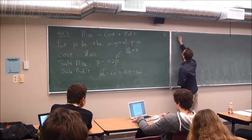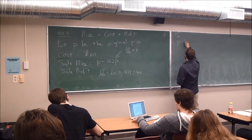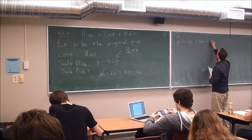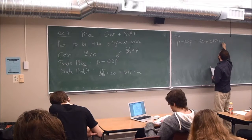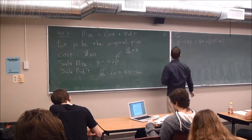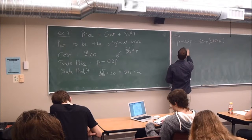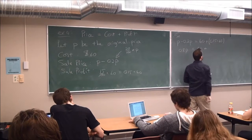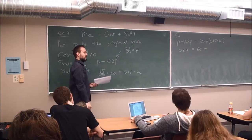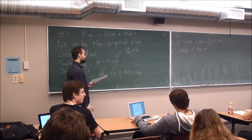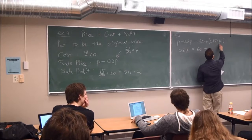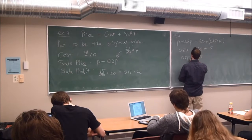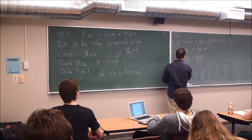So I can write my equation as price is P minus, I'll leave it like this, 0.2P. Cost is 60. Plus profit is 0.15 times 60. I can put these in brackets just to emphasize because my multiplication comes first. So what do I have? I have 0.8P. This is 1P minus 0.2P. So what is this? 0.15 times 60. What is it? 0.15 times 60. So I have 0.8P equals 69 divided by 0.8.